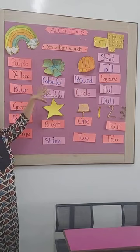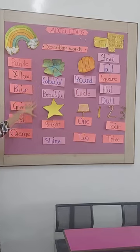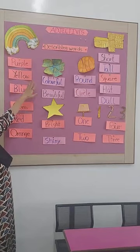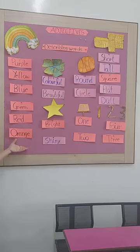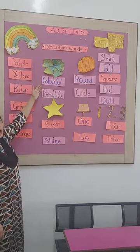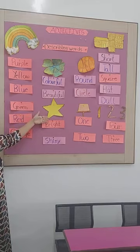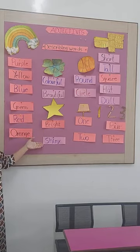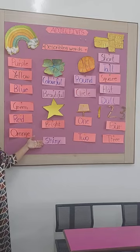Let's see some more examples on the board. If we take the example of 'flower' — flower is a noun, and all these words can describe the flower: purple flower, yellow flower, blue flower, green flower, red flower, orange flower. The colors are adjectives. We can also say the flower is colorful or beautiful. And 'star' is also a common noun — how is the star? It might be bright or shiny. So 'bright' and 'shiny' are telling the quality of the star, and this is also an example of adjectives.